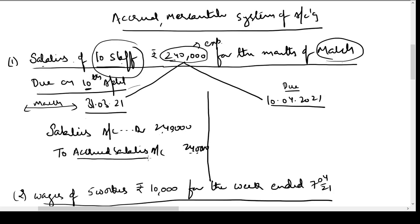The Accrued Salaries Account represents the names of these 10 staff. The logic: Salaries is a nominal account — expenses and losses are debited. Accrued Salaries is a personal account — the business owes money to the staff, hence credit. That is the entry passed on 31st March. We are recording the expense on 31st March itself because we have enjoyed the benefits; we are not waiting for the payment.